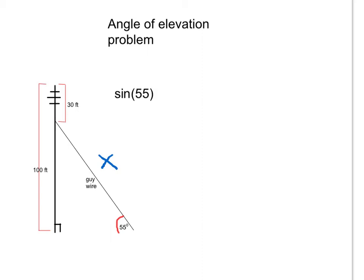So the sine of 55 is going to be the opposite, the opposite length of the distance up that that triangle makes. The opposite length is 70 feet because the full tower is 100 feet. The wire is attached 30 feet down. That makes the distance from the ground to where the wire is attached 70 feet.